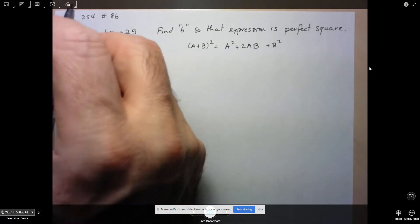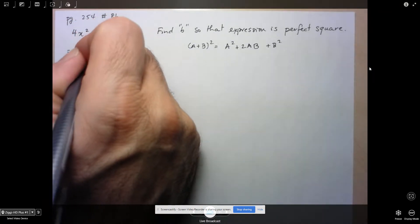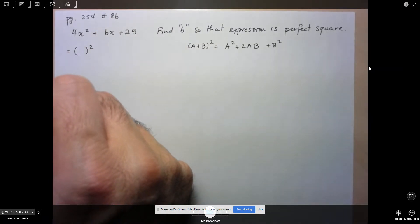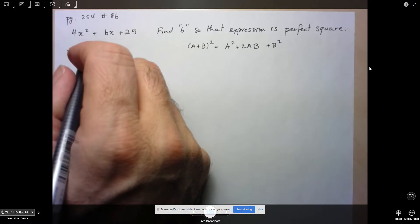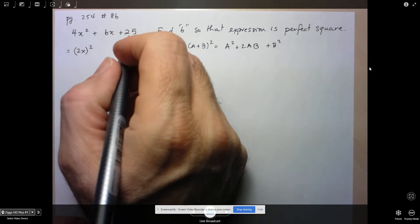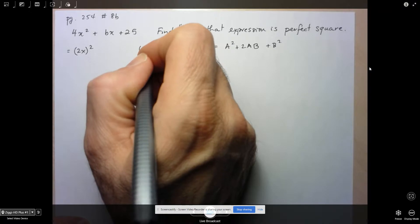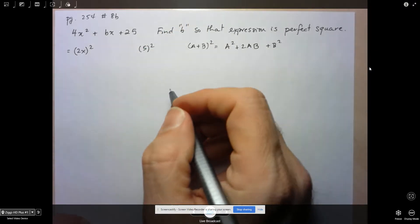Now how do I know that? Because I can write 4x squared, can I write it as some expression squared? Yeah, that's equal to 2x squared. Same thing with 25. 25 is a perfect square.